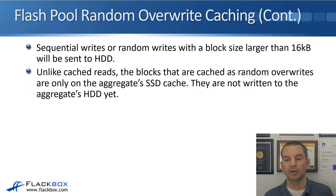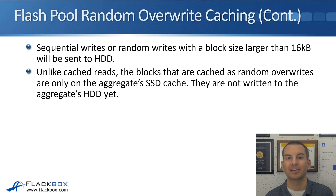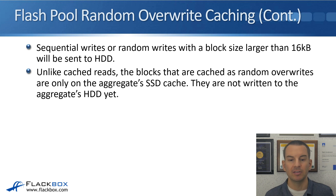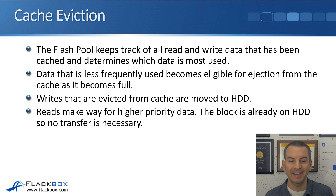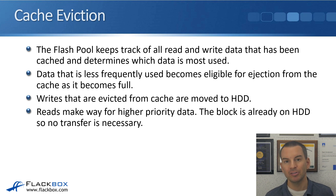Sequential reads or random writes with a block size larger than 16 kilobytes will be sent to HDD. We want to optimise the use of SSD capacity — only put data there which gives the biggest performance boost. Unlike cached reads, blocks cached as random overwrites are only on the aggregate's SSD cache; the HDD has an old copy, but the new current copy is only on the SSD and has not yet been written to the aggregate's HDD. The FlashPool keeps track of all read and write data cached in the SSDs and determines which data is most used. Data that is less frequently used becomes eligible for eviction as the cache becomes full. Writes evicted from cache are moved to HDD to preserve the data copy.